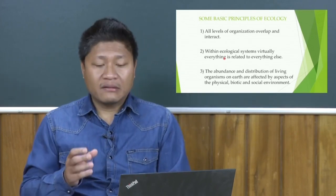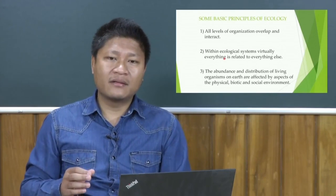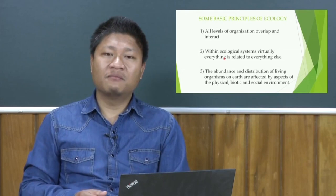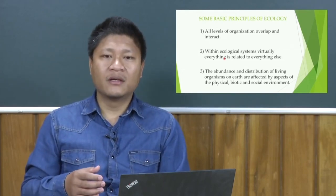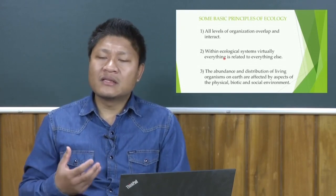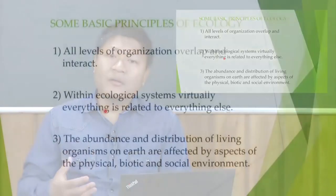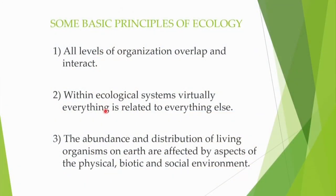Thirdly, the abundance and distribution of living organisms on earth are affected by aspects of the physical, biotic, and social environment. When we say social environment, it is not just human — even animals have their own social organizations, and they also reflect how physical aspects have an influence on their social organizations.